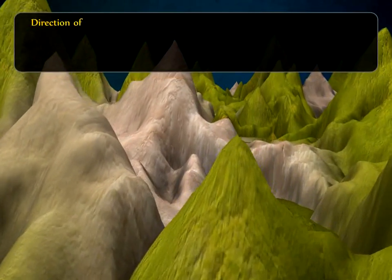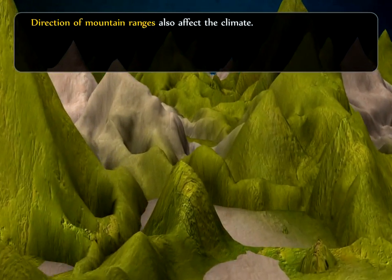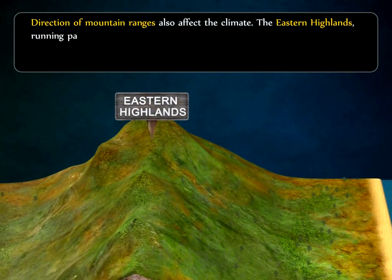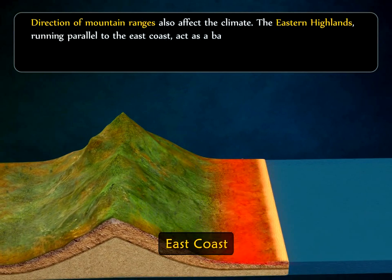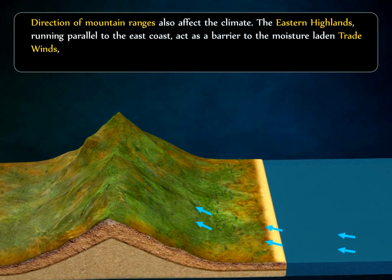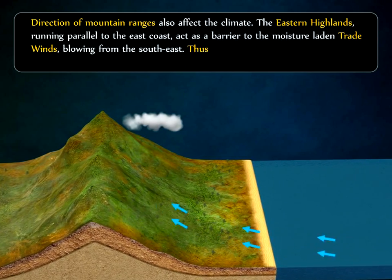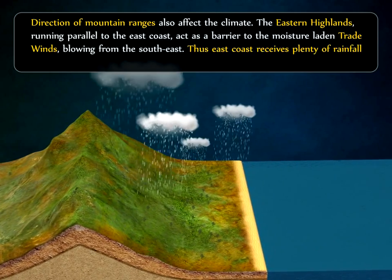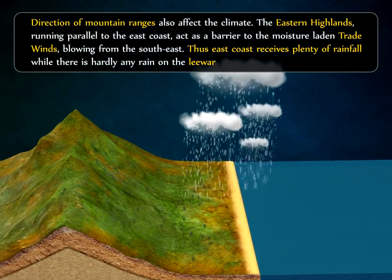The direction of mountain ranges also affects the climate. The eastern highlands running parallel to the east coast act as a barrier to the moisture-laden trade winds blowing from the southeast. Thus, the east coast receives plenty of rainfall while there is hardly any rain on the leeward side.